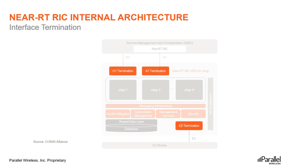There are three different interfaces to the non-real-time RIC. The first is the E2 termination, which terminates the SCTP connection from each E2 node. Then we have the A1 termination, which provides a generic API for the near-RT RIC by means of which it can receive and send messages via the A1 interface. Finally, we have the O1 termination, which communicates with SMO via the O1 interface and exposes O1-related management services from the near-RT RIC.